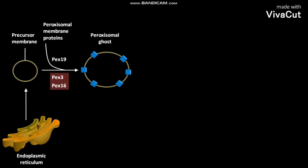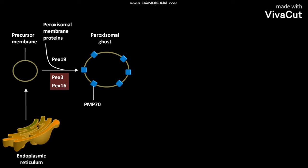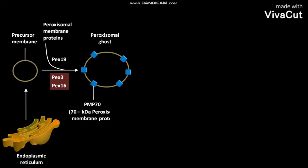The peroxisomal membrane proteins present in the membrane of the peroxisomal ghost include PMP-70, which is a 70 kilodalton peroxisomal membrane protein.